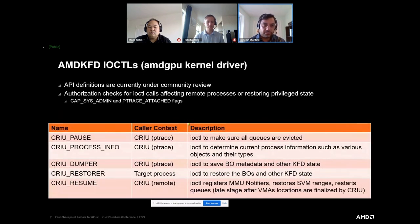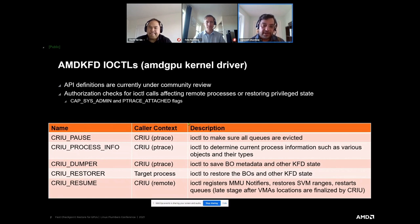Before going into plugin hooks in detail, I should introduce the new ioctls we are using in our kernel-mode driver — all currently under review. They are used in conjunction with the plugin hook calls. The first three — CRIU_pause, CRIU_process_info, and CRIU_dumper — are called in a separate context where the CRIU master checkpoint process is ptrace-attached and has hijacked the process. The ioctls are called from a known ptrace-attached queue context, so our kernel-mode driver knows to allow them to proceed.